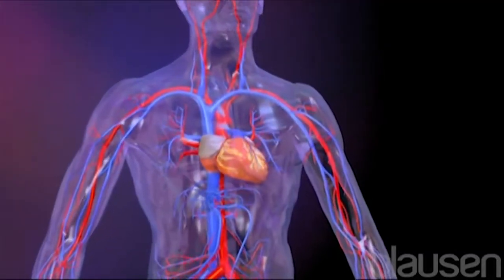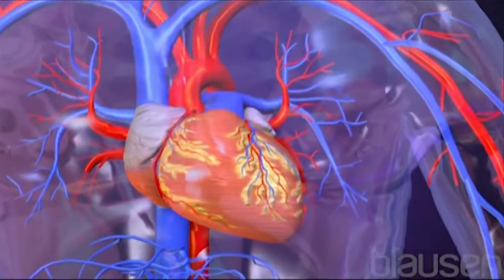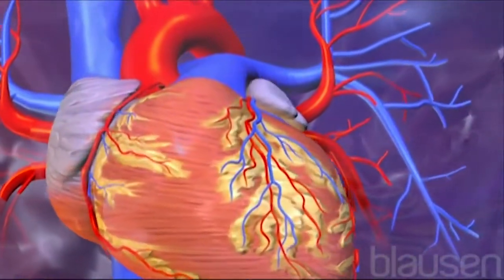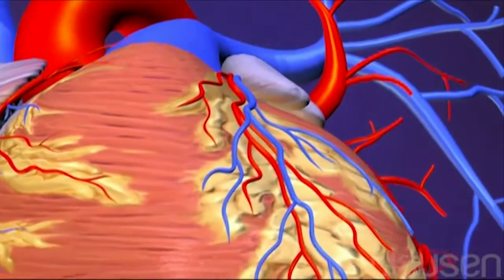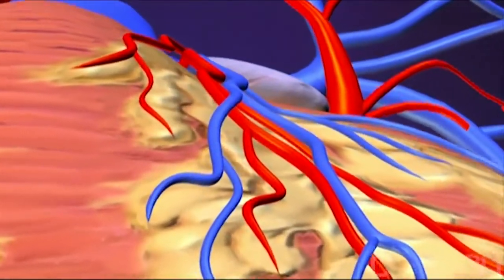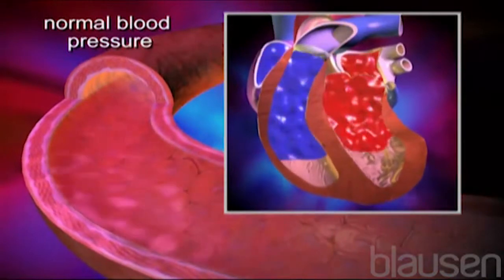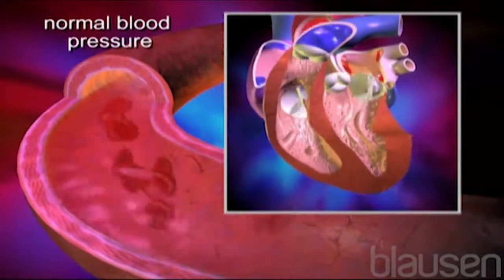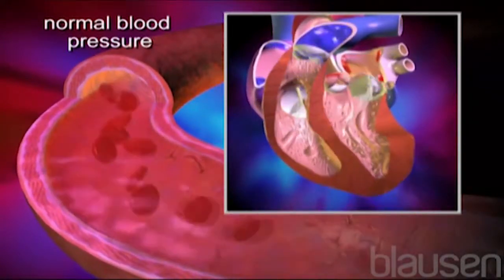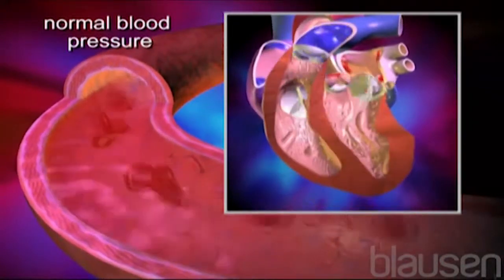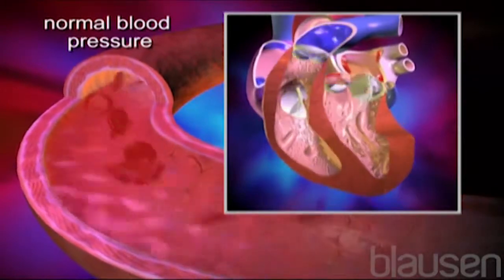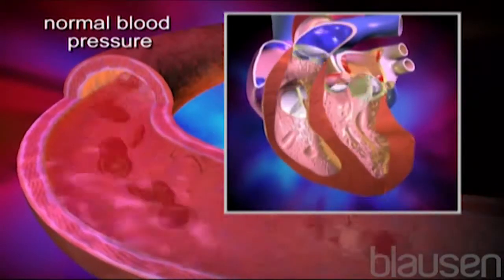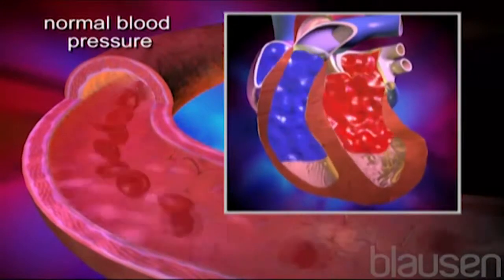The heart is a beating muscle that pumps oxygen-rich blood to the body through a network of arteries and veins. What we commonly call blood pressure is the measurement taken when the heart's left ventricle contracts and blood is forced through the arteries. As the blood travels from the heart, it exerts pressure against the walls of the arteries — this is referred to as blood pressure. Blood pressure is used to evaluate the force and amount of blood being pumped from the heart, as well as the flexibility and condition of the arteries.